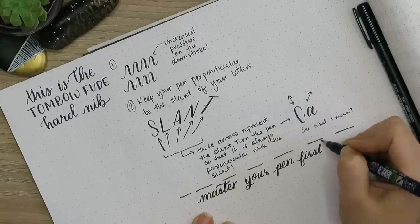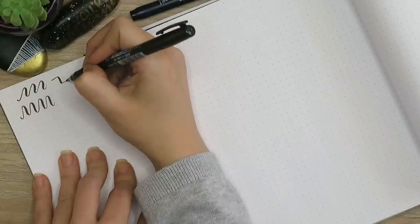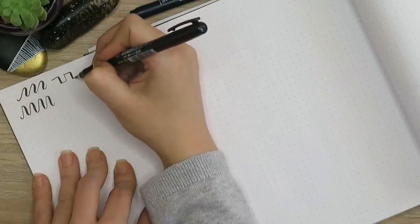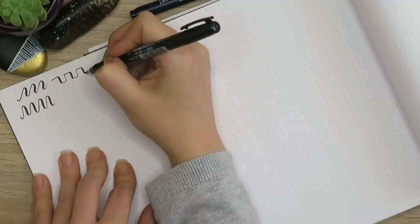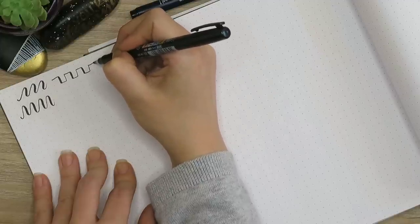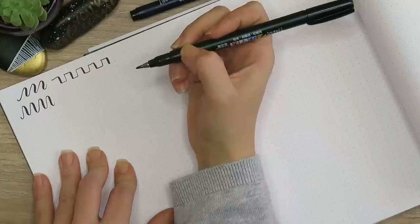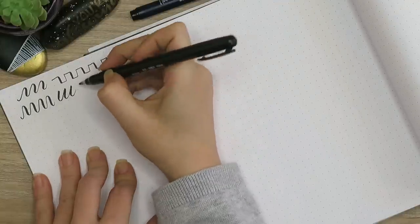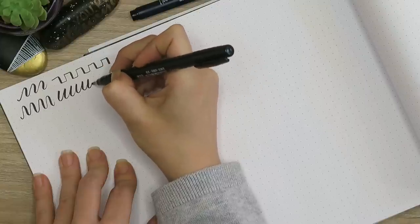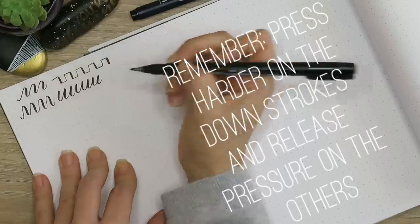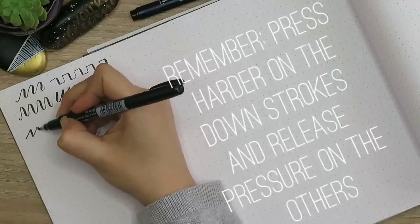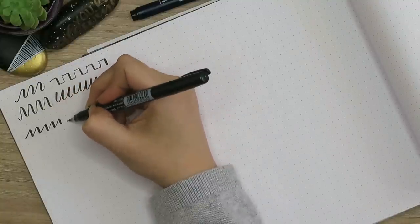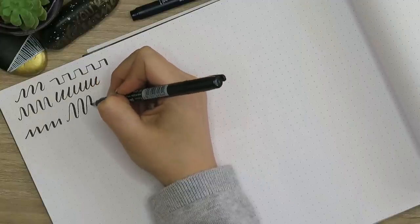Once you get that down, once you master the pen, it'll be so easy for you. Some exercises that you want to do to master your pen—there are a ton of them—but you want to master your ability to move between those thin and thick lines properly. We've got these wavy shapes, we've got box shapes, and then repeating these lowercase I shapes, as you can see, and then we also have a zigzag shape.